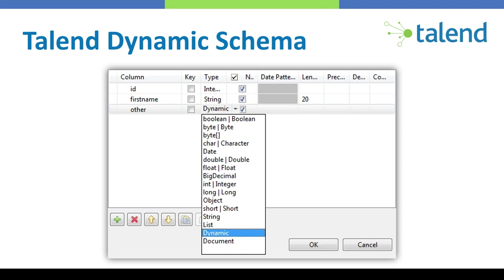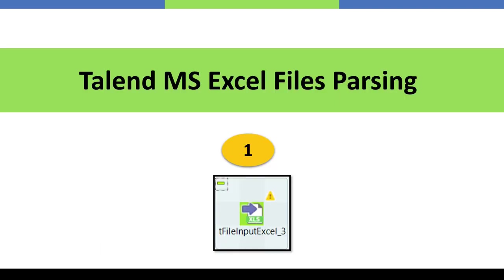The Talend dynamic schema feature allows you to read files in a completely on-the-fly dynamic approach when you're not sure how many columns there are or haven't defined the schema statically. Keep in mind this is a feature in the paid version of Talend — Talend Enterprise has this feature, but in the free studio you cannot see the dynamic schema option.